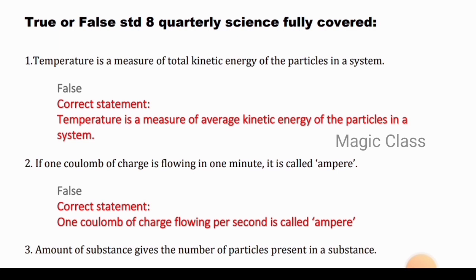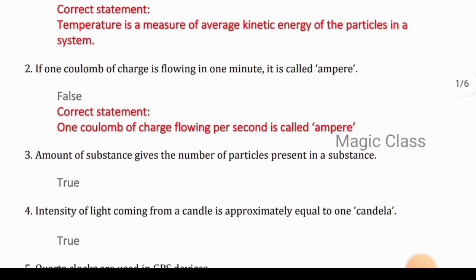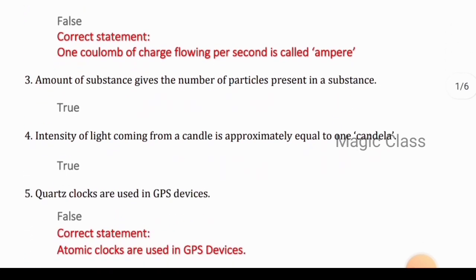Question 1: Temperature is a measure of total kinetic energy of the particles in a system. Answer is false, because the correct statement is temperature is a measure of average kinetic energy of the particles, not total. Question 2: If one coulomb of charge is flowing in one minute it is called ampere. Answer is false, because one coulomb of charge flowing per second is called ampere. Question 3: Amount of substance gives the number of particles present in a substance. Answer is true.